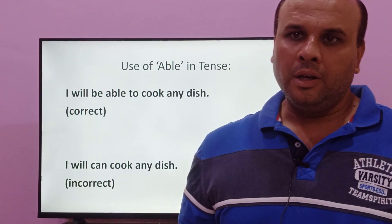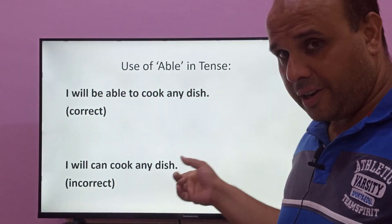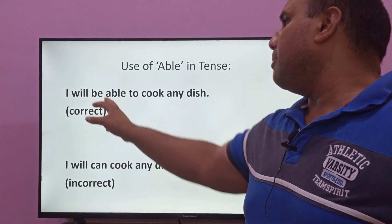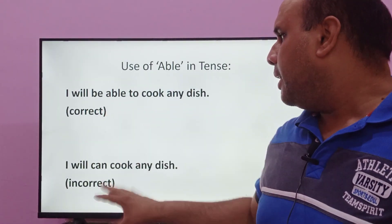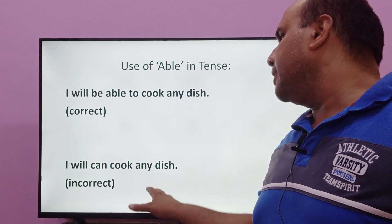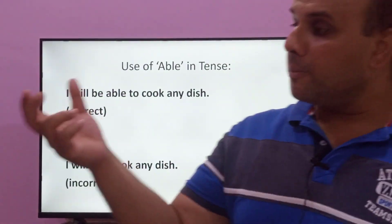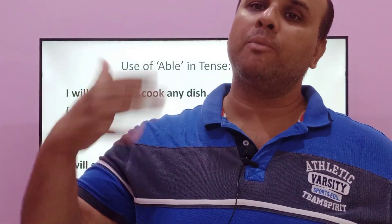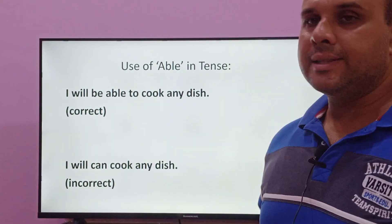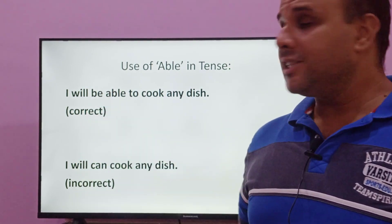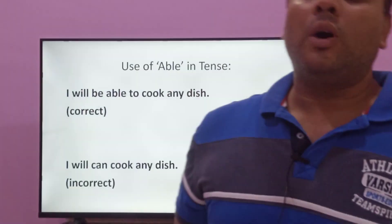If we talk about tense, how can we differentiate? Consider the sentence: 'I will be able to cook any dish.' Here, 'will' is the modal verb and then we use 'be able' — this is correct because 'able' is an adjective. However, 'I will can cook any dish' is grammatically incorrect, because 'will' and 'can' are both modal verbs and you cannot use two modal verbs together. That is why the first sentence is grammatically correct.